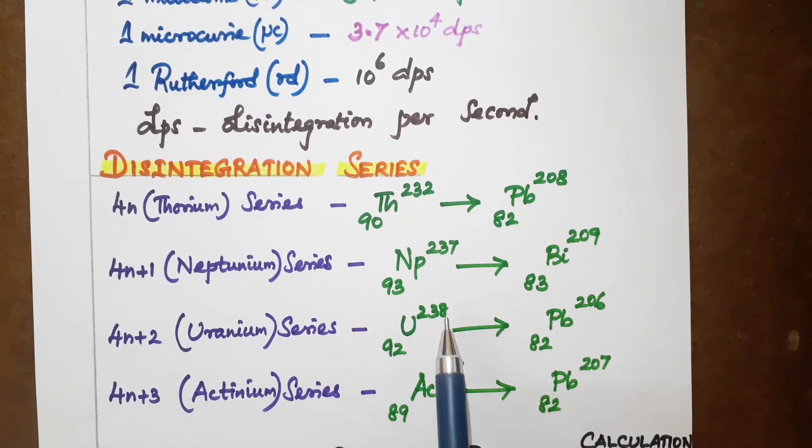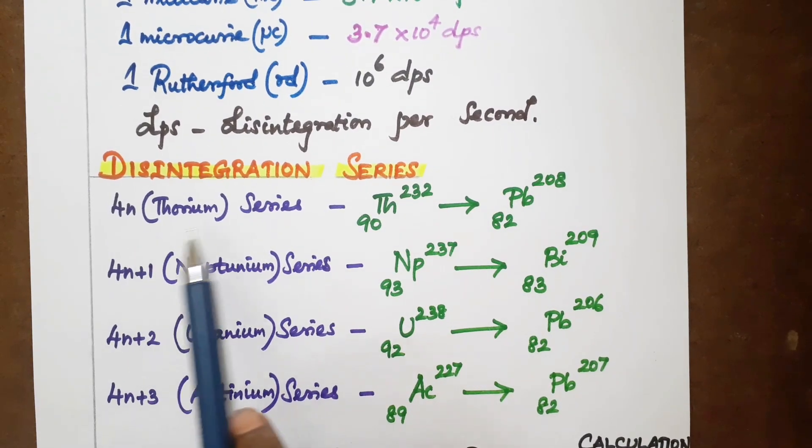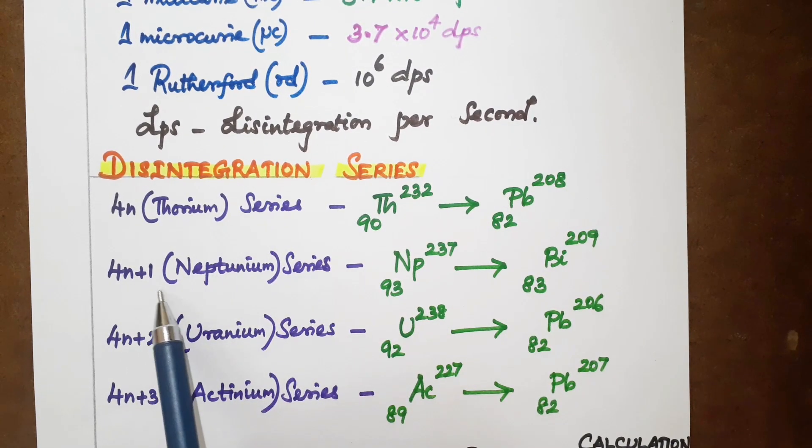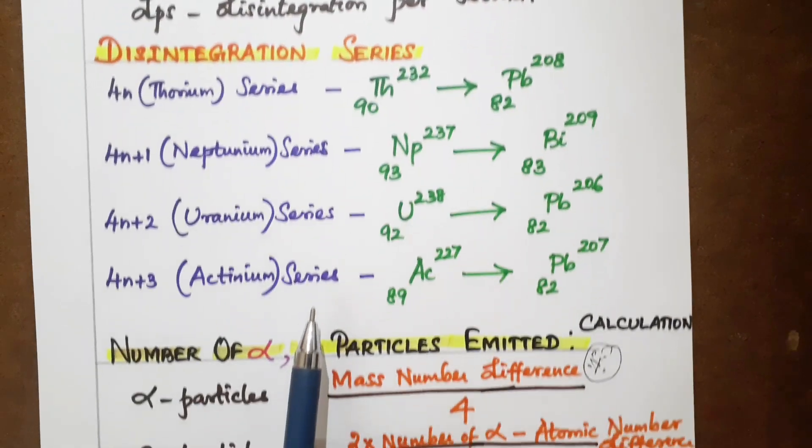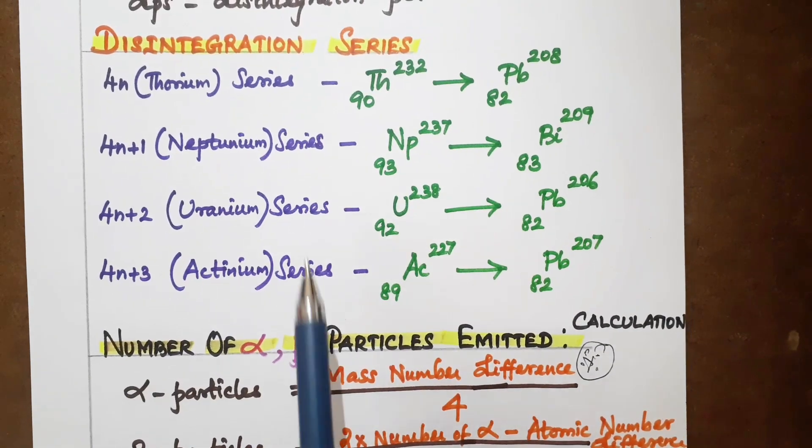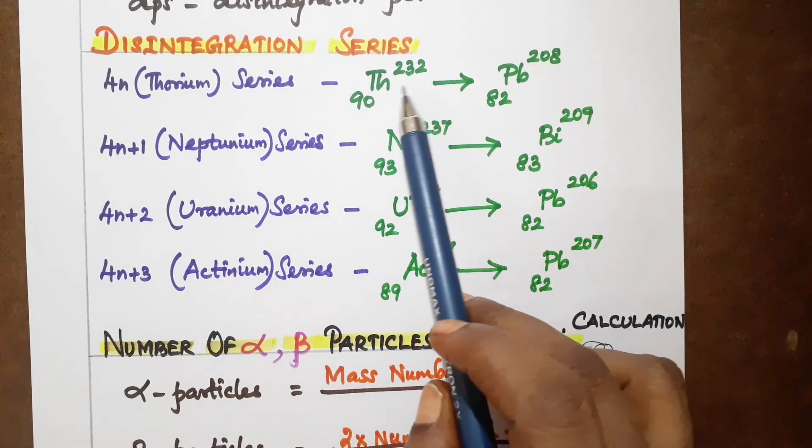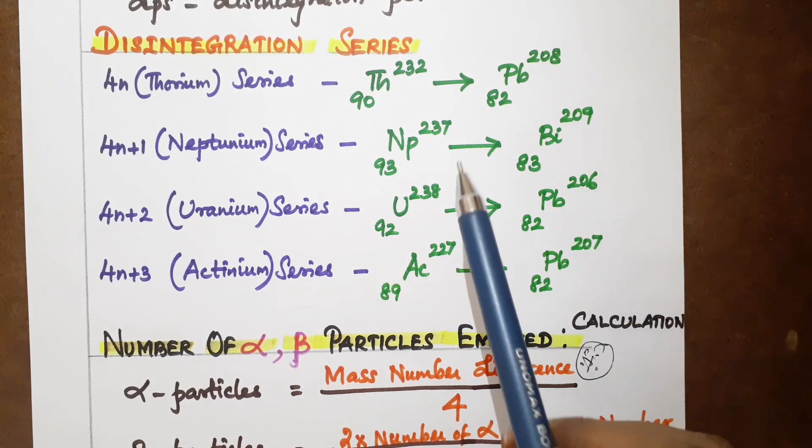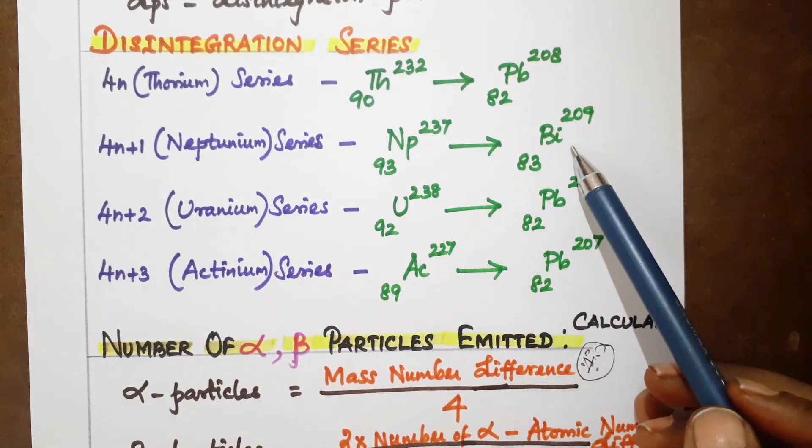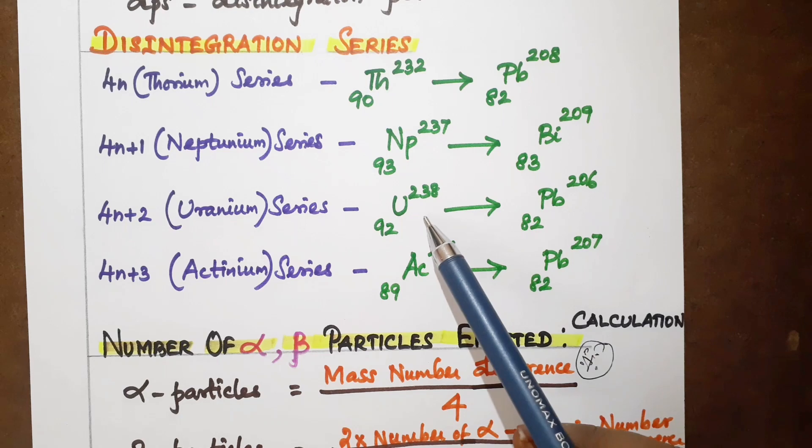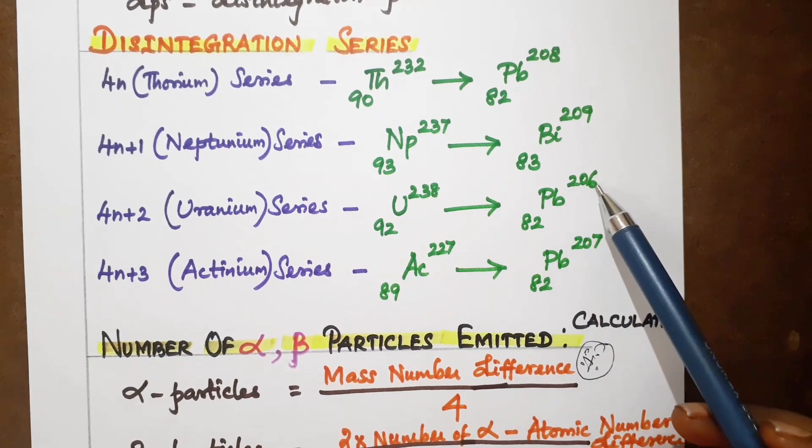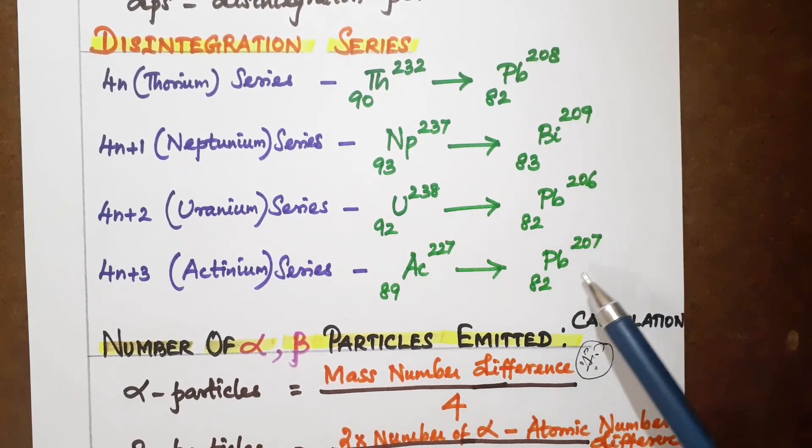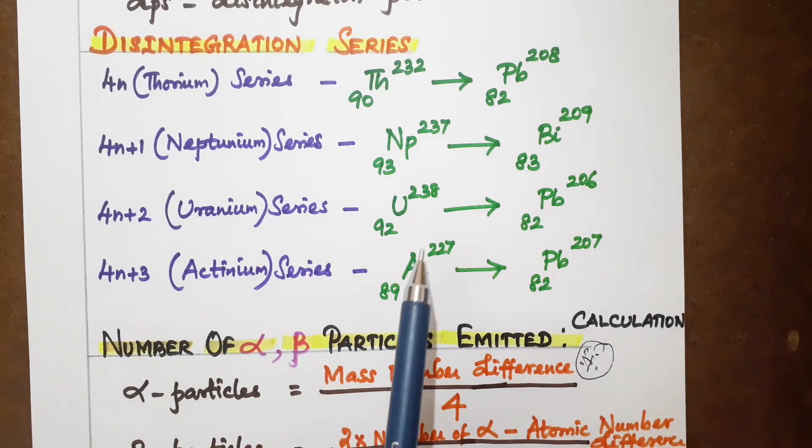Disintegration series: 4N series is thorium, 4N+1 is neptunium, 4N+2 is uranium, 4N+3 is actinium series. Examples: thorium Th-232-90 to lead Pb-208-82, neptunium Np-237-93 to bismuth Bi-209-83, uranium U-238-92 to lead Pb-206-82, actinium Ac-227-89 to lead Pb-207-82.